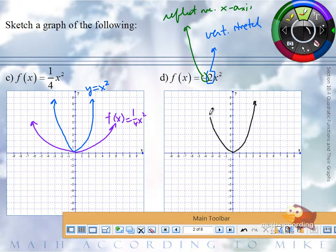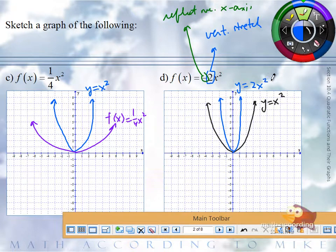So again, just for comparison, if in black here we have a graph of x squared, in blue here I have a graph of 2x squared. Then in green, I'm going to reflect that over the x-axis.